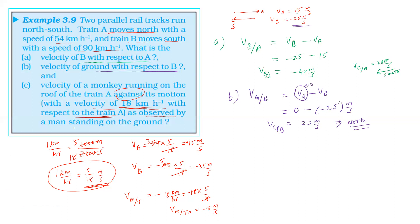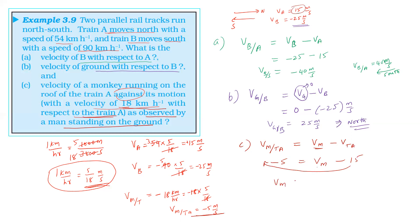What is the velocity of the monkey observed by the man standing on the ground? Third one: velocity of monkey with respect to train A equals velocity of monkey minus velocity of train A. The velocity of the monkey with respect to ground is 10 meter per second. The man is on the ground and the monkey is moving in the north direction.